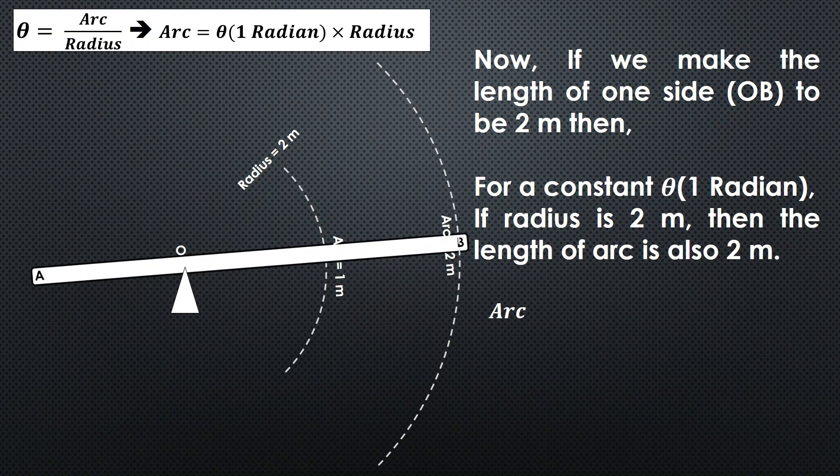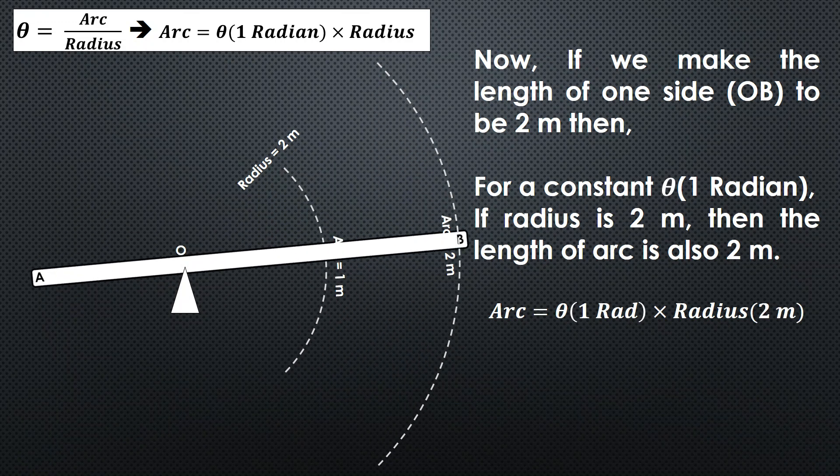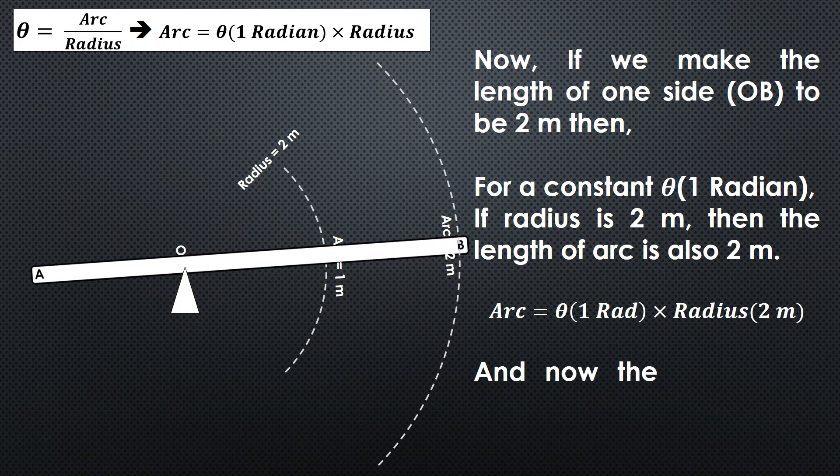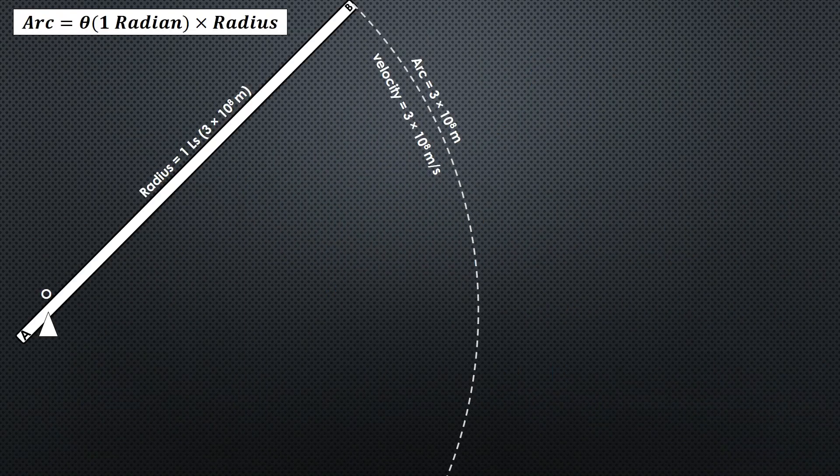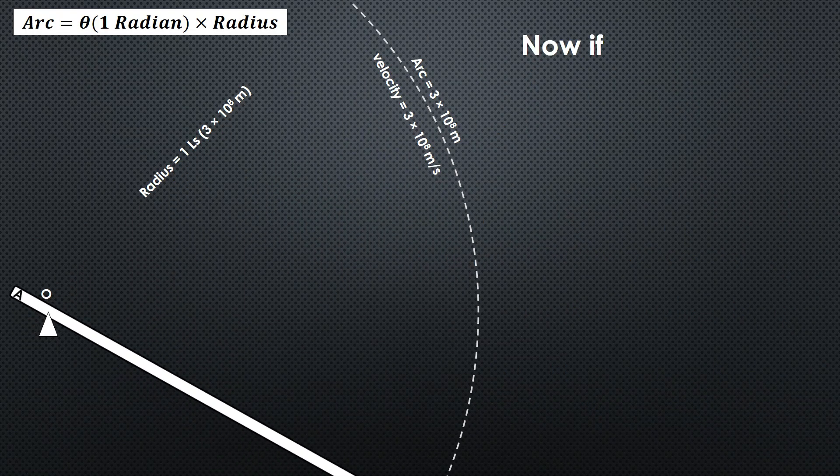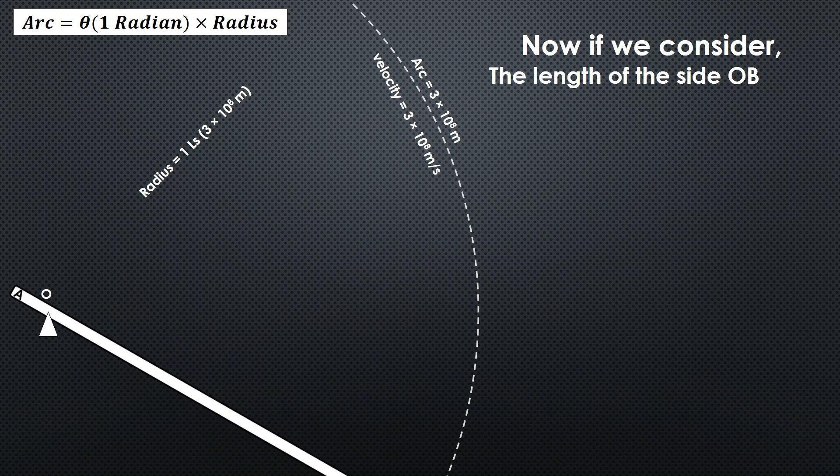So according to the formula, now the arc length is 2 meters and the velocity of point B is 2 meters per second. In this way, when we move on, let us consider that the length of one arm OB is 3 times 10 to the power 8 meters.